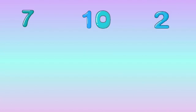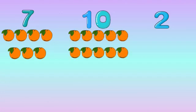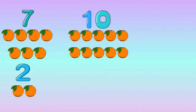Now let us try again with 3 more numbers: 7, 10, 2. Number 7 has 7 oranges, number 10 has 10 oranges. Number 2 with 2 oranges is the smallest in this group.